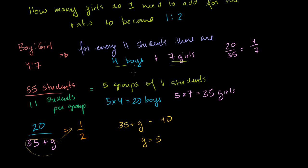So if you add 5 girls to your classroom, you're going to have 40 girls. So then you would have 40 girls. And you have 20 boys. And your ratio is 20 to 40, which is 2 to 4, which is the same thing as 1 to 2. And we've done our problem.